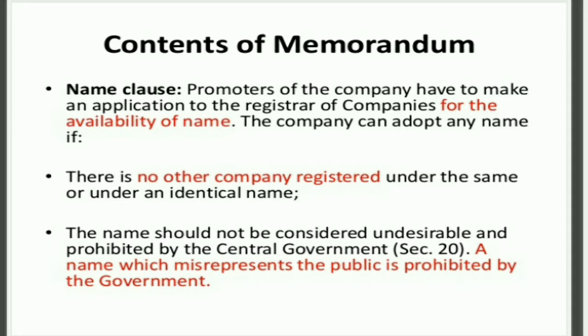The Memorandum of Association contains several clauses. The first is the Name Clause — the company's name is decided here. Promoters have to suggest seven to eight names so that if one is unavailable, alternatives are ready.